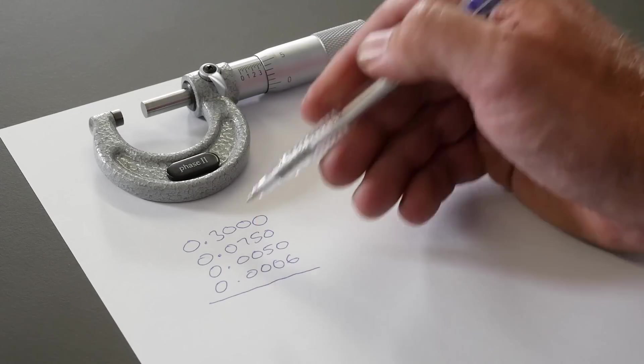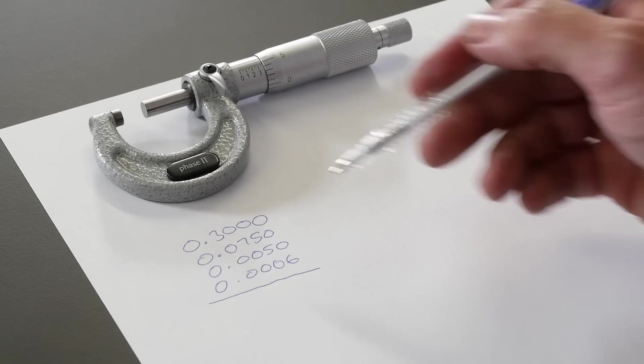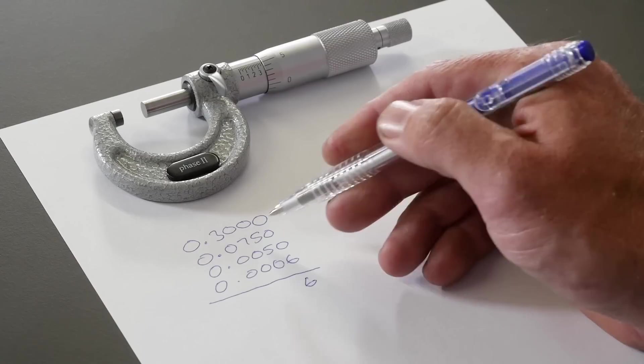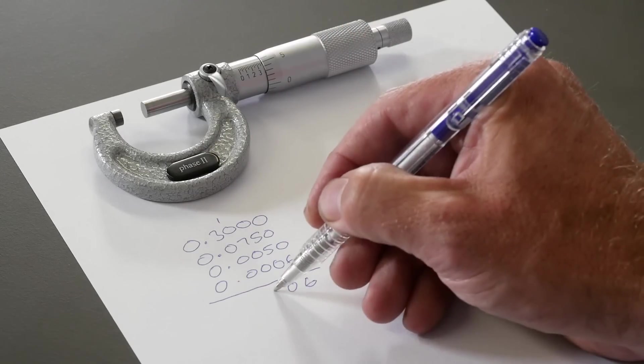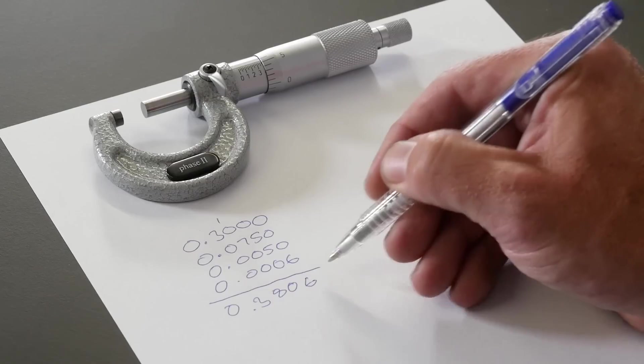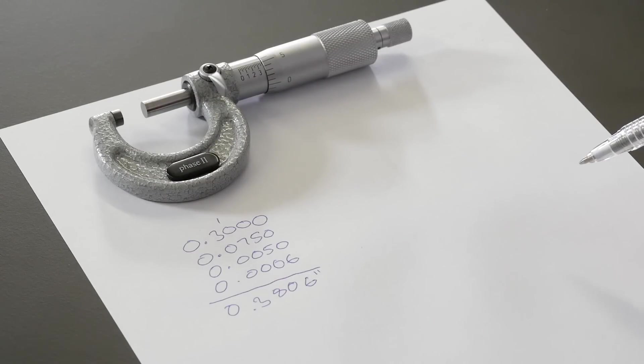OK so this represents the measurement from our micrometer. And all we need to do now is add up the different values. So we have 0.0006 of an inch. We have two fives here which add up to equal 10 so we're just going to carry the one. We have an eight and a three. So our final measurement is 0.3806 of an inch.